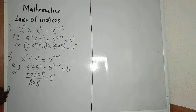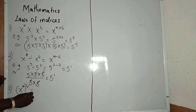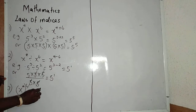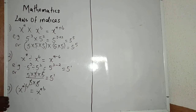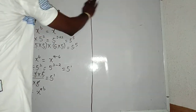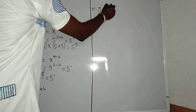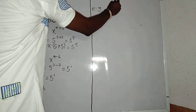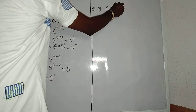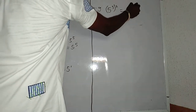Law 3: If I have x raised to power a, all in bracket, raised to power b, it will be equal to x raised to power a times b. Example: if I have 5 raised to power 3, all in bracket, raised to power 2, it will be equal to 5 raised to power 6.